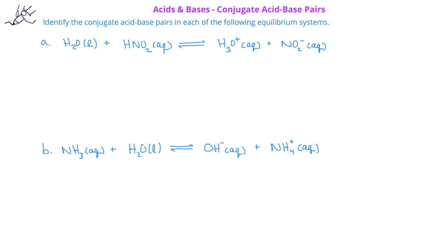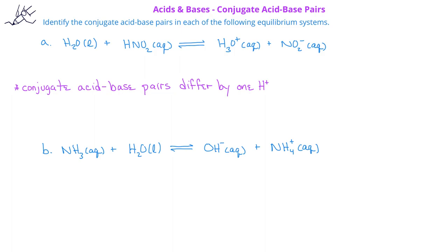In order to identify conjugate acid-base pairs, we have to remember that, by definition, conjugate acid-base pairs differ by only one hydrogen ion in their structures or formulas. In this first example, we have H2O, and on the product side, we have H3O+.